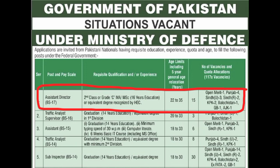इन सभी ages में 5 years general age relaxation है। Assistant Director की 15 vacancies announced हुई हैं: open merit की 1, Punjab की 4, Sindh Urban की 3, Sindh Rural की 2, KPK की 2, Balochistan की 1, GB की 1, और Azad Jammu & Kashmir की 1।